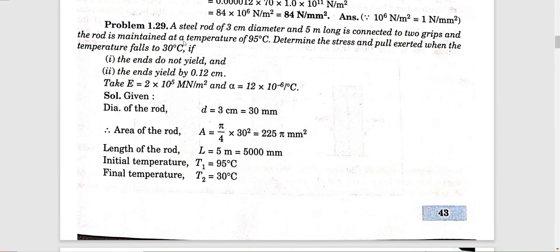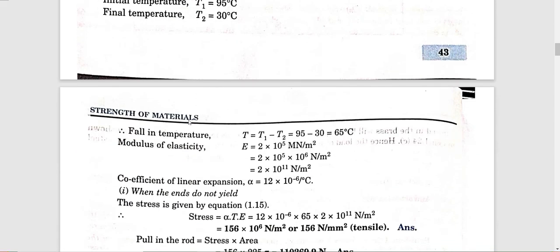Problem 2: A steel rod of 3 cm diameter and 5 m long is connected to two grips, and the rod is maintained at a temperature of 95 degrees Celsius. Determine the stress and the pull exerted when the temperature falls to 30 degrees Celsius — first if the ends do not yield, and second if the ends yield by 0.12 mm. The change in temperature T equals T1 minus T2 equals 95 minus 30 equals 65 degrees Celsius.